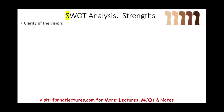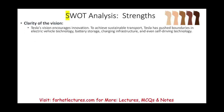Another strength is clarity of vision. Tesla's vision is to change the world and achieve sustainable transport, which has pushed boundaries in electric vehicle technology, battery storage, charging infrastructure, and self-driving technology. This clarity of vision attracts talented employees who are drawn to it, and it also appeals to investors.